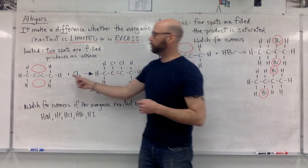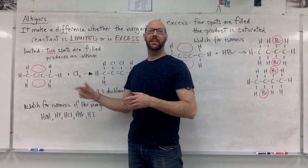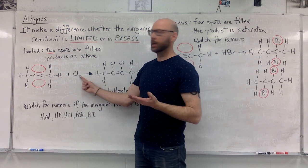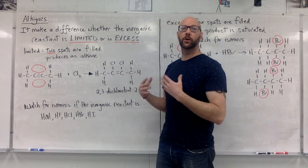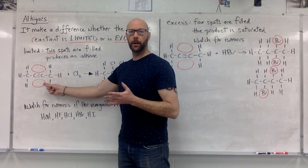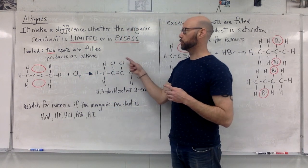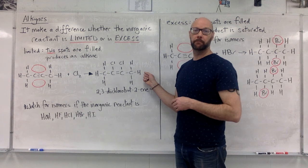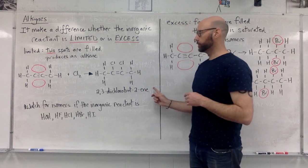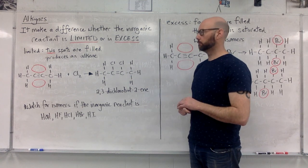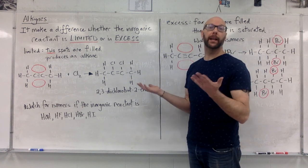Here I have but-2-yne, the unsaturated hydrocarbon reacting with chlorine, Cl2. So two of those four spots are going to get filled. Now it doesn't make a difference if we fill the top or the bottom. I chose to fill the top. Put the two chlorines in there and they end up with an alkene. This one is 2,3-dichlorobut-2-ene. Two of the four spots of the alkyne end up getting filled.